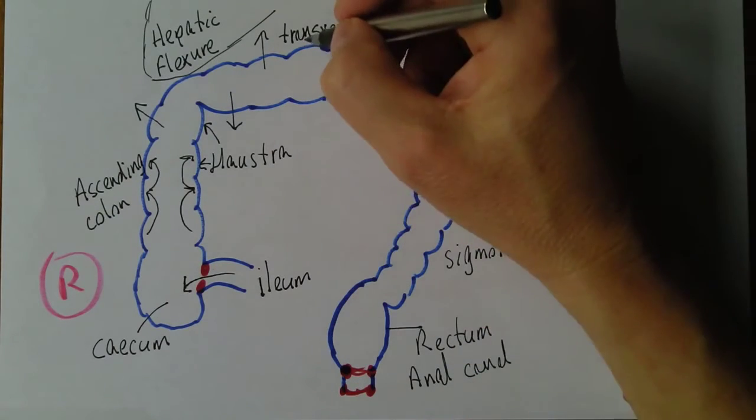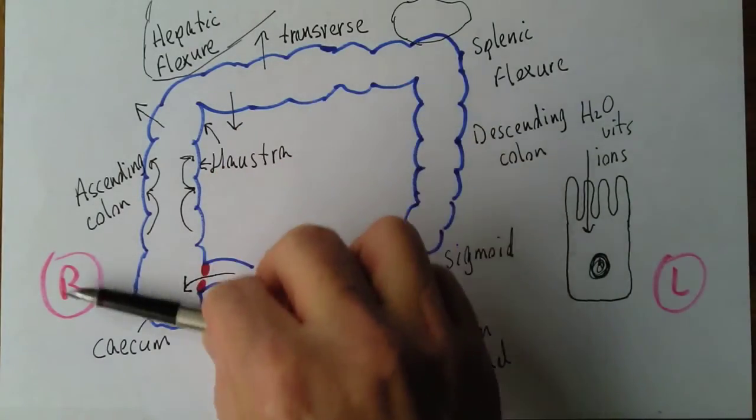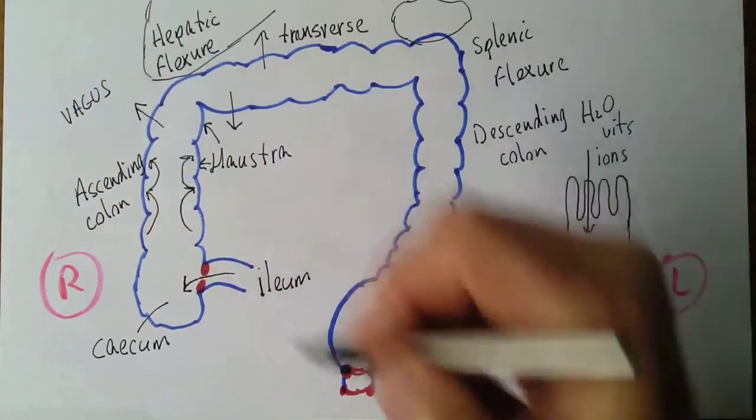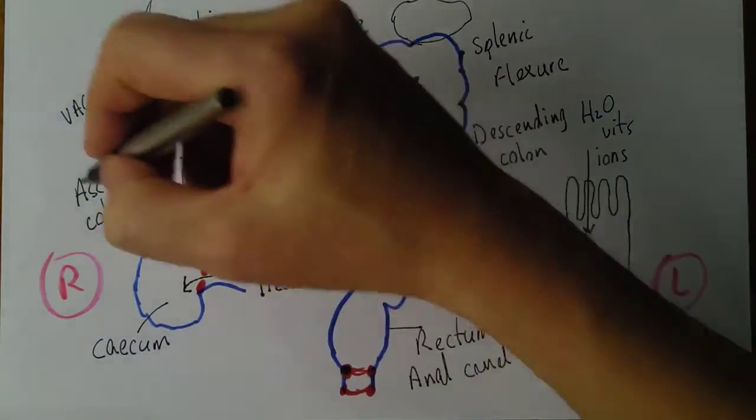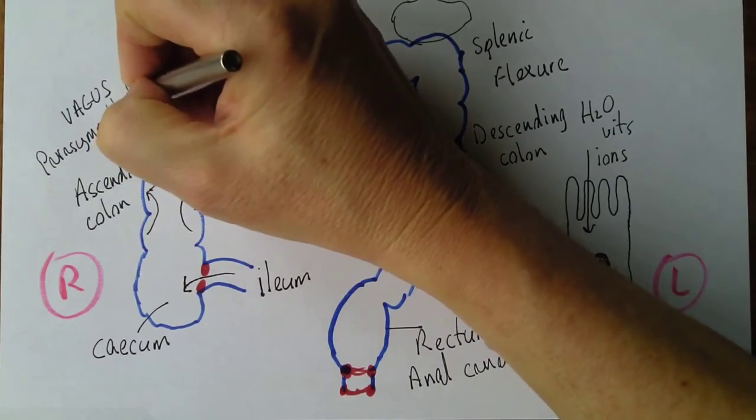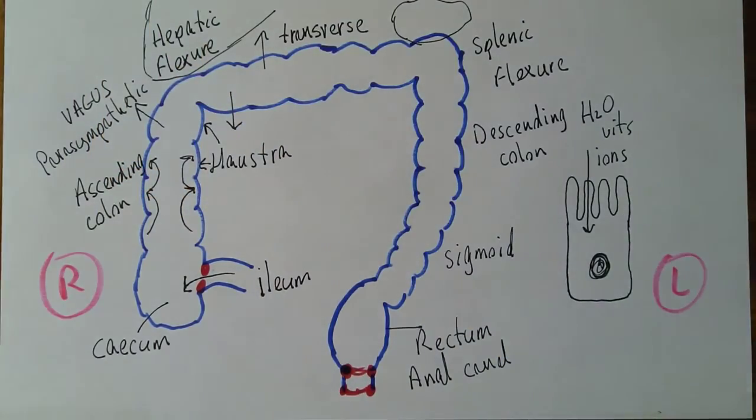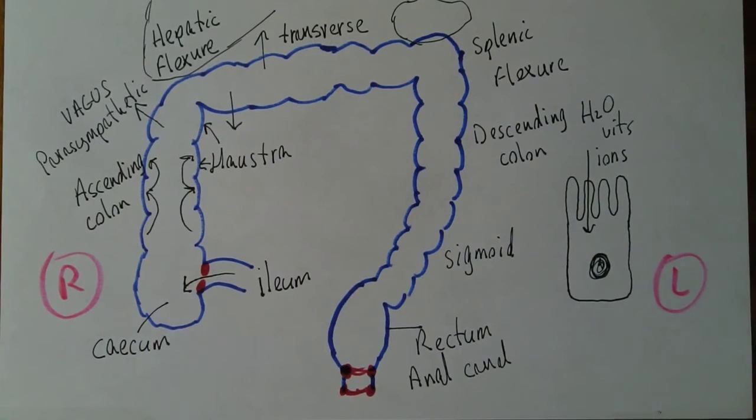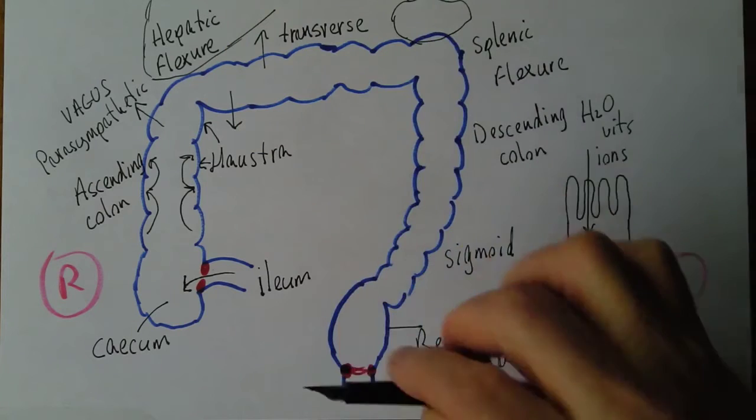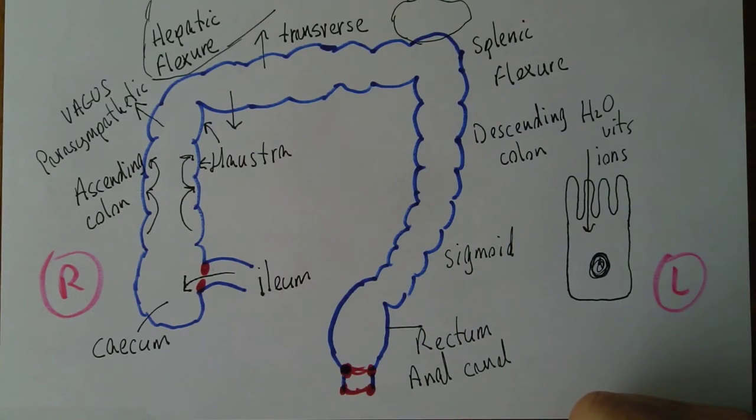And the first half of the colon, sort of from there down the way, that's all controlled by the vagus nerve, one of the body's large parasympathetic nerves, because most gastrointestinal function is controlled by the parasympathetic nervous system. But the second half of the colon is controlled by sacral parasympathetic nerves that leave the spinal cord, so there's sacral parasympathetic nerves controlling the second half from the sacrum.